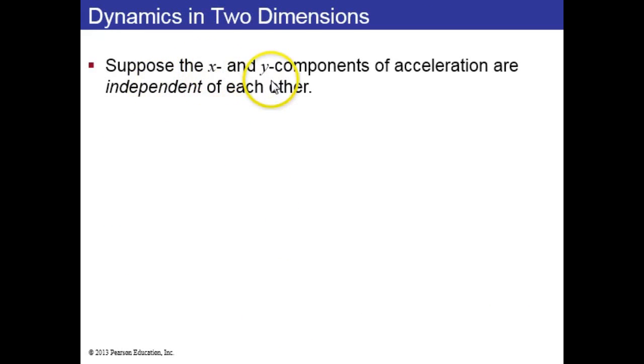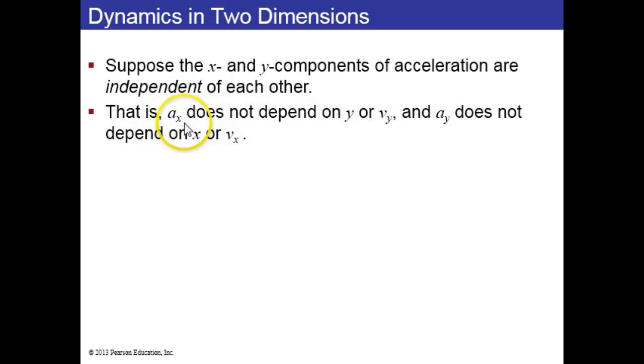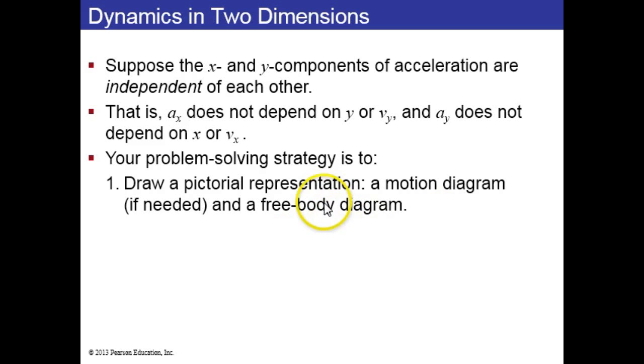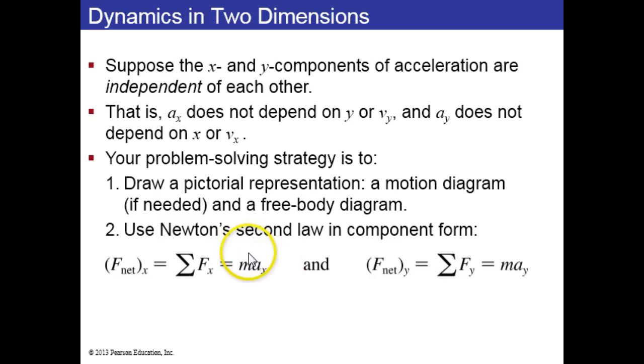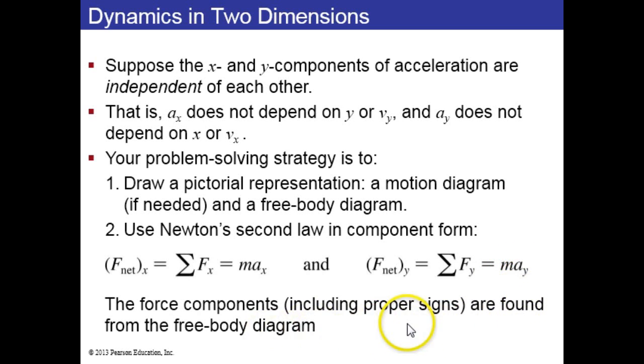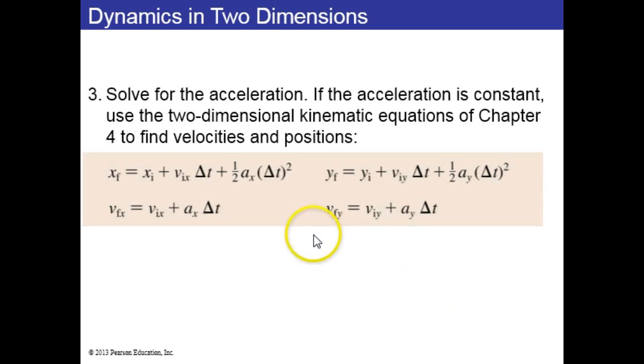First of all, let's think about the x and y components of the acceleration. Sometimes they're independent of one another, in which case you make a free-body diagram, draw some sort of diagram to solve the problem, and then use Newton's second law in component form. The net force equals mass times acceleration. This is actually two equations in this chapter: the net force in the x direction equals mass times the x component of acceleration, and the sum of forces in the y direction equals mass times the y acceleration. You find these components by looking at the free-body diagram. Then you solve for the acceleration and use the equations of kinematics split into x and y components. The only thing that's the same on both sides is the time, delta t.